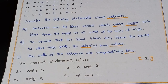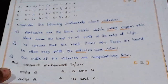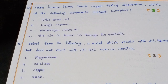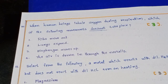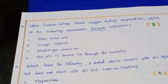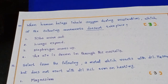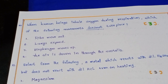Tenth question: When human beings inhale oxygen during respiration, which of the following movements does NOT take place? Options: ribs move out, lungs expand, diaphragm moves up, air is drawn in through the nostrils. The right answer is that the diaphragm moves up — that does not take place during inhalation.